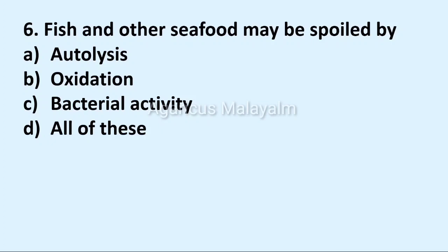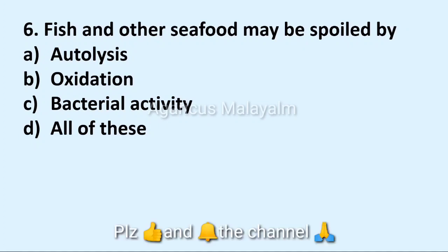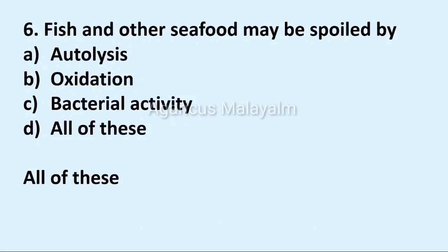Sixth question: fish and other seafood may be spoiled by. Option A: autolysis. Option B: oxidation. Option C: bacterial activity. Option D: all of these. Correct answer: Option D, all of these.